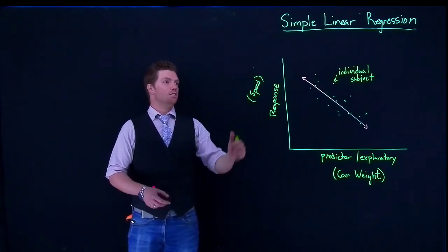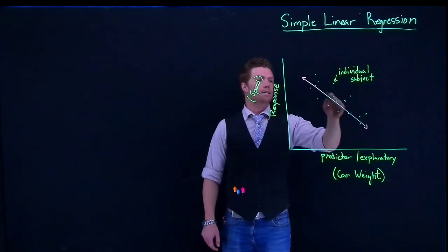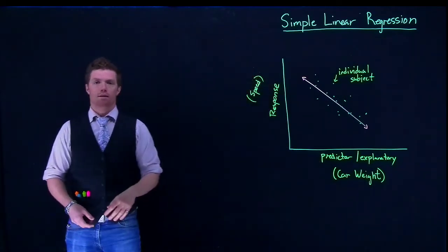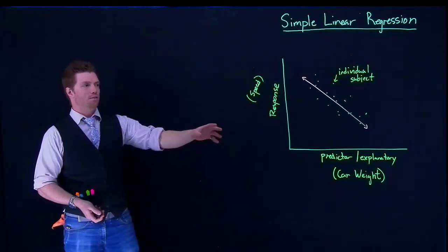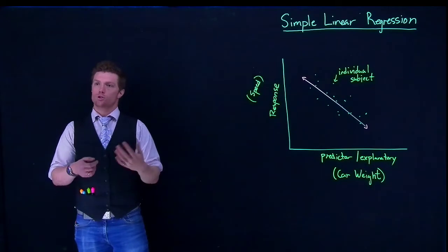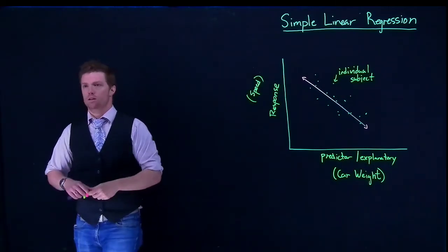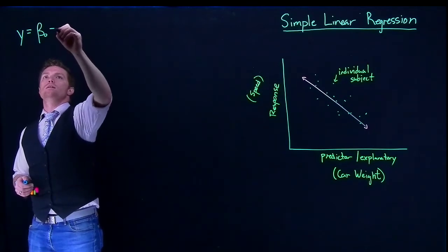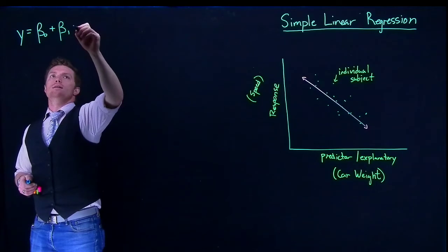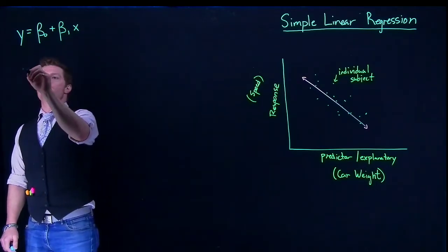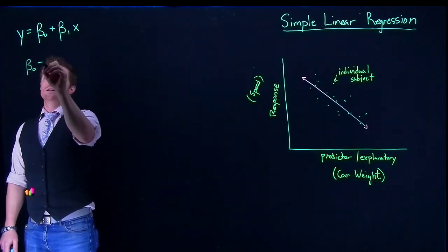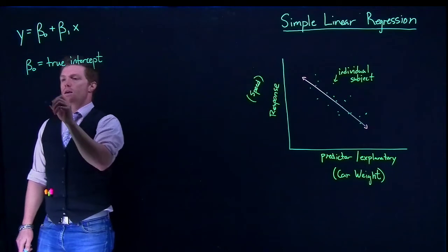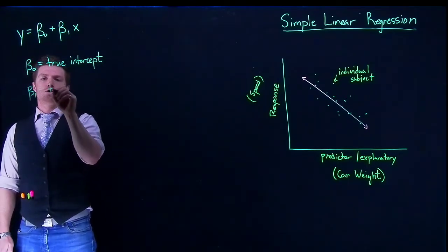When we're doing this analysis, we are trying to find what the model is for this line. If we measured every single car of this type and got its weight and speed, we would know the true population model. In regression analysis, that looks like y equals beta naught plus beta 1 times x, where beta naught is the true intercept and beta 1 is the true slope.